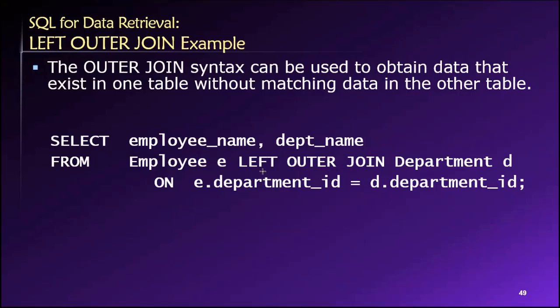So for example, if we have employees who have not been assigned to a particular department, with an inner join those employees would not be included in the results. But with a left outer join, assuming the employee table is on the left, any employees not assigned to a department would still appear in the results. The best way to understand this is to see it, so let's look at an example.